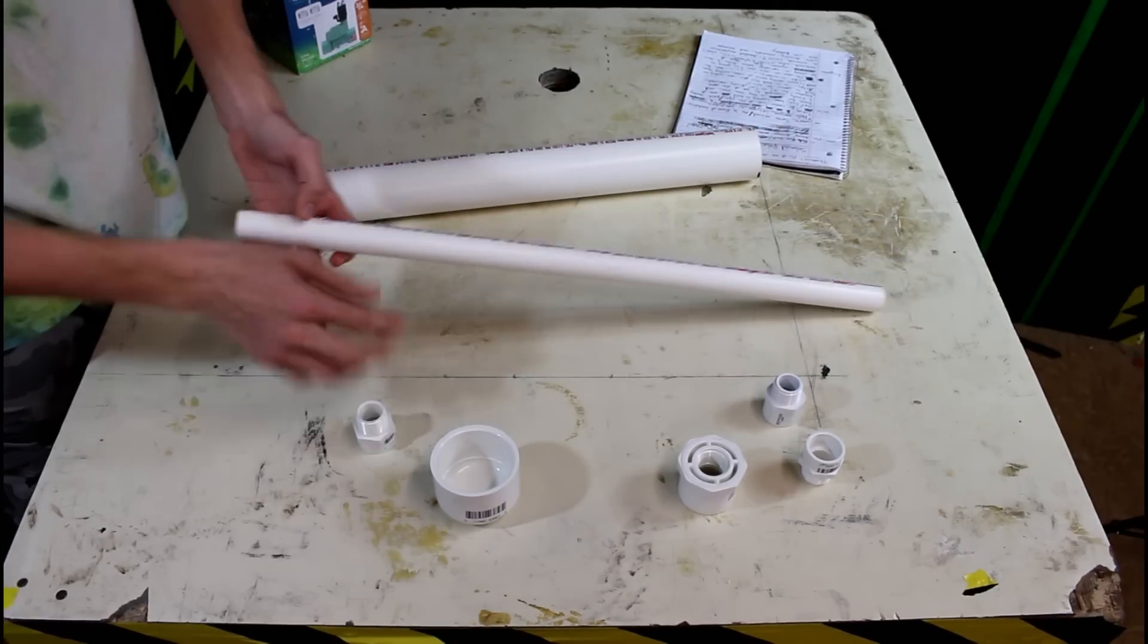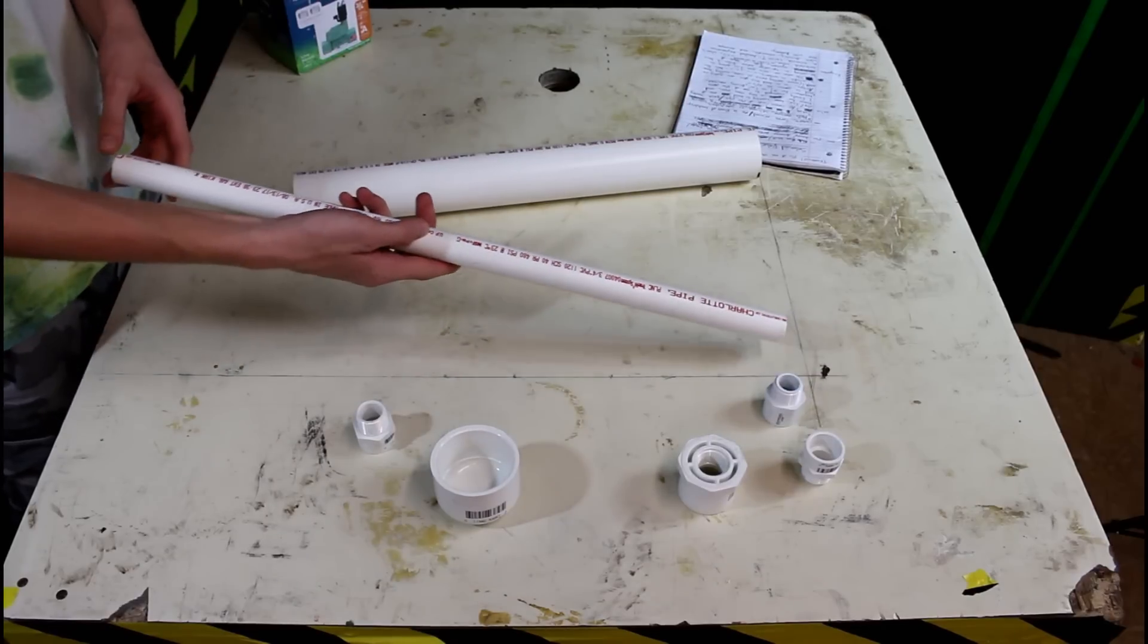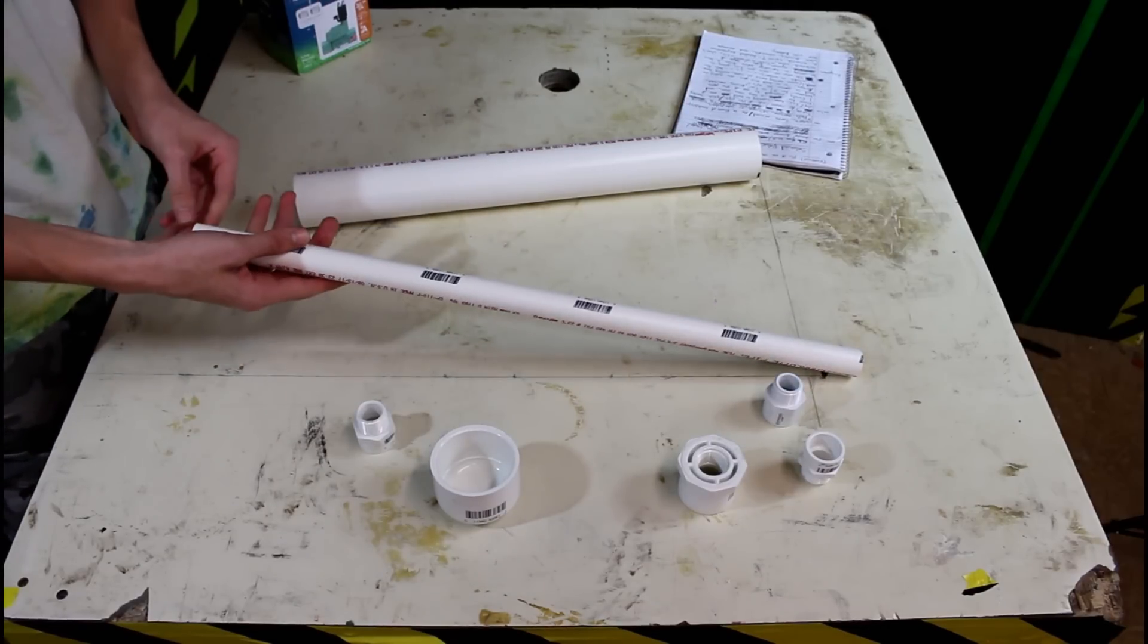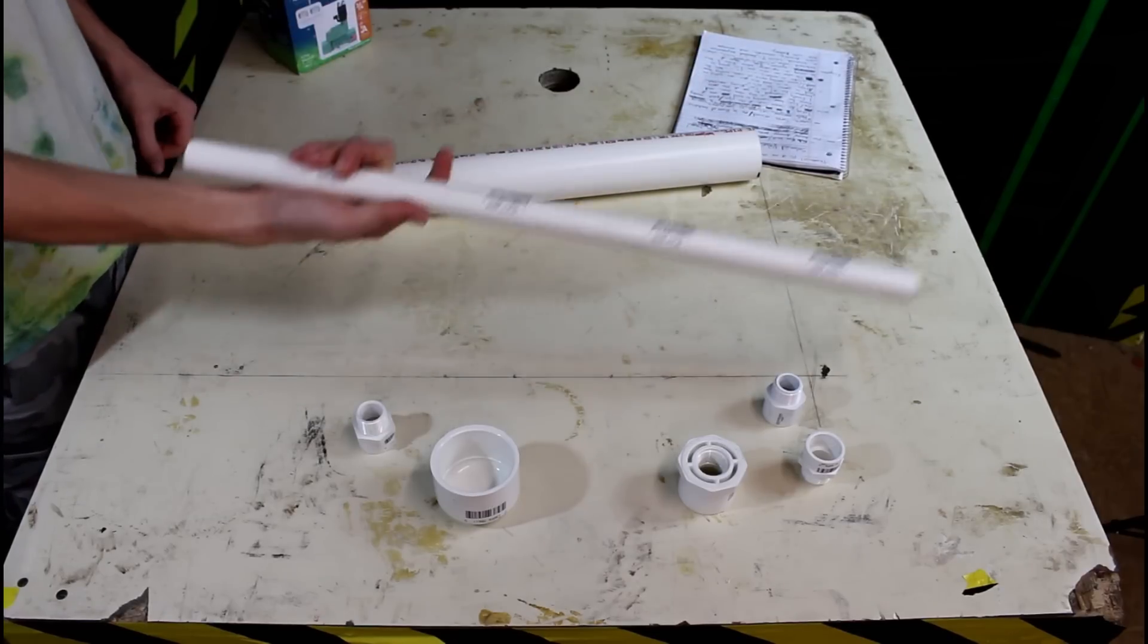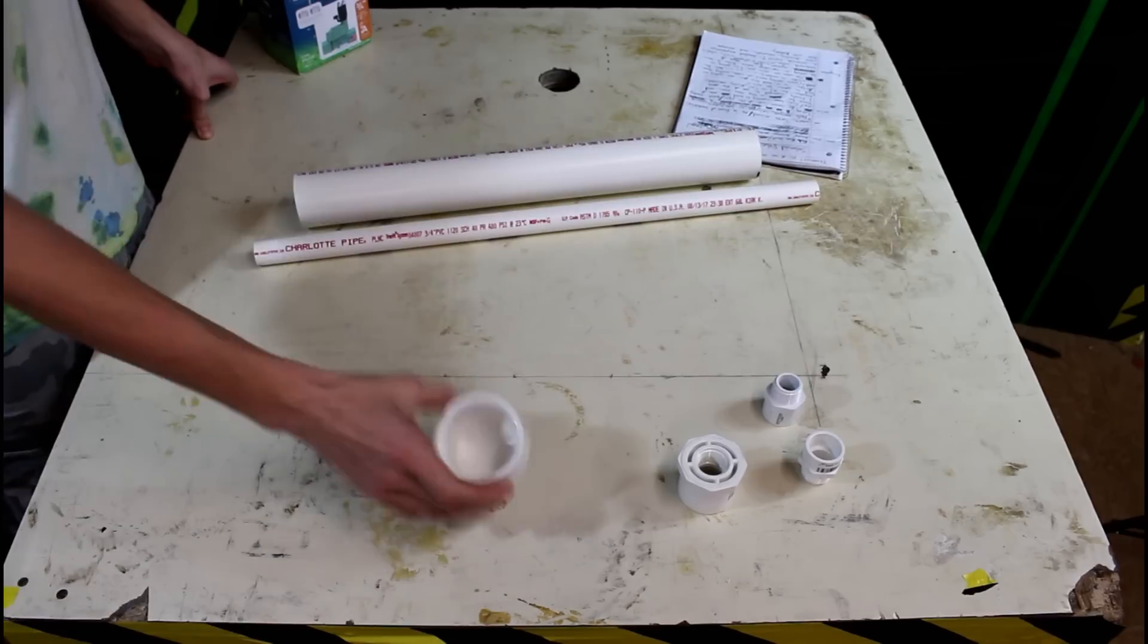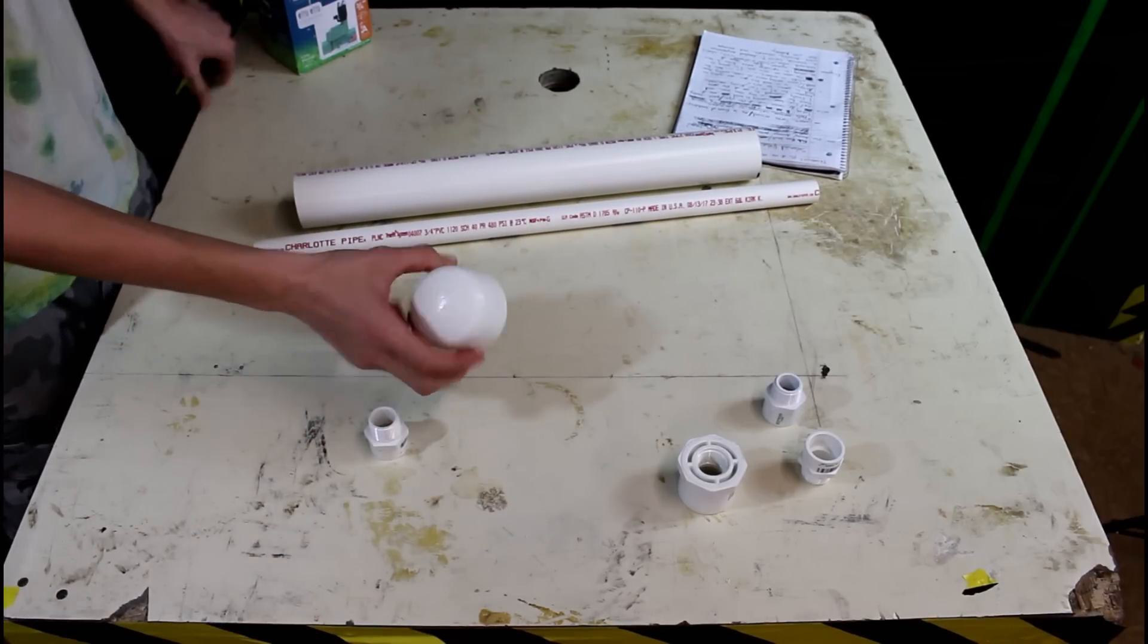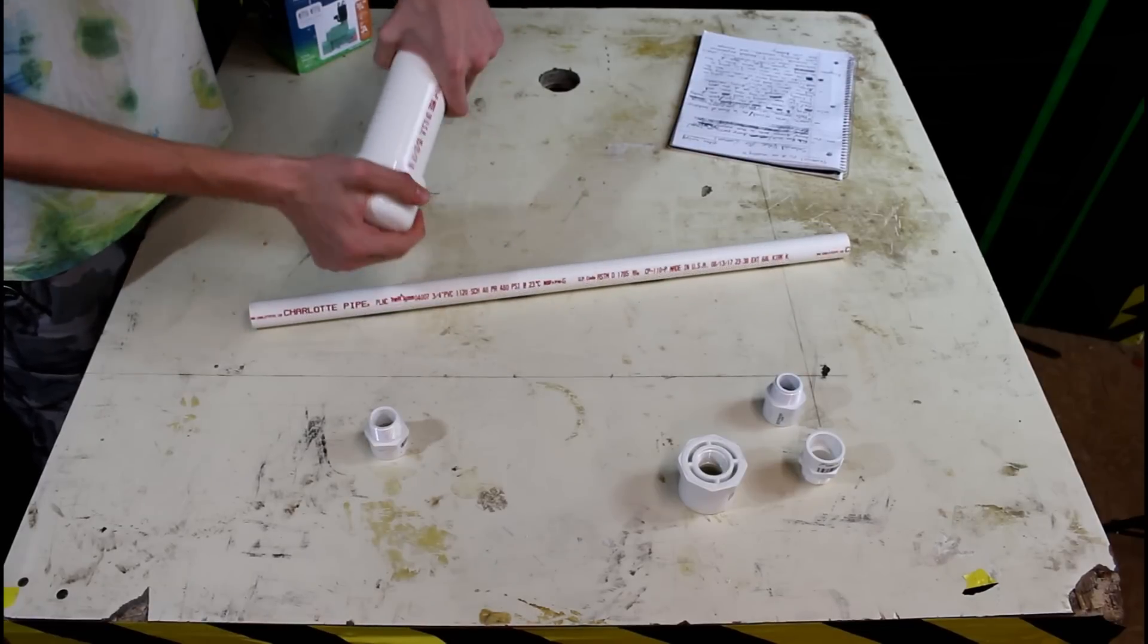Got some three-quarter inch PVC pipe, once again a two-foot section. Home Depot sells PVC pipe in two-foot sections. It's a lot more economical than having to buy a whole piece and not use all of it. You're also going to need a two-inch diameter end cap.